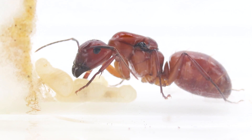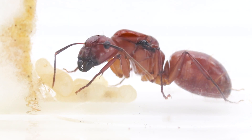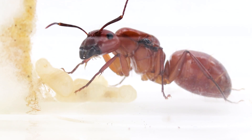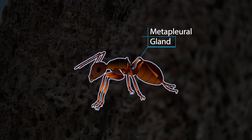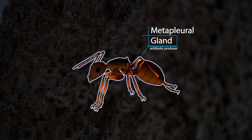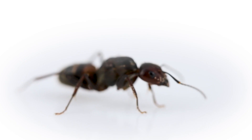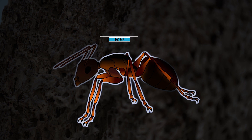Their elbowed antennae are another feature to distinguish them from other insects. Additionally, a small mark on their exoskeleton, made of chitin, reveals the presence of the metapleural gland. This gland, exclusive to ants, serves as an antibiotic fluid producer, aiding these remarkable insects in maintaining their health and keeping pests away from their colony.